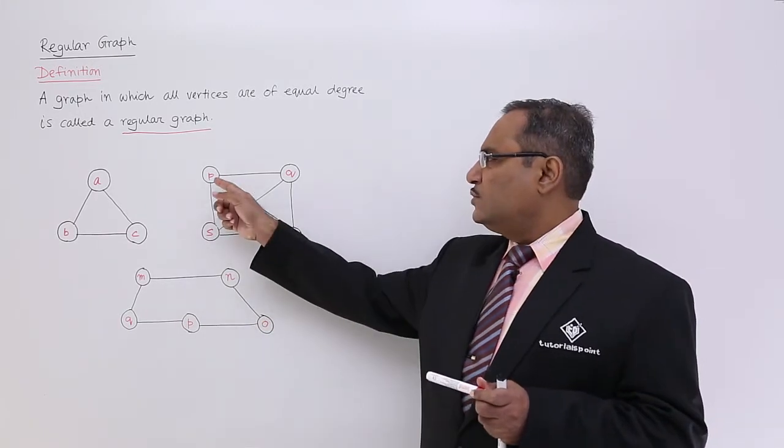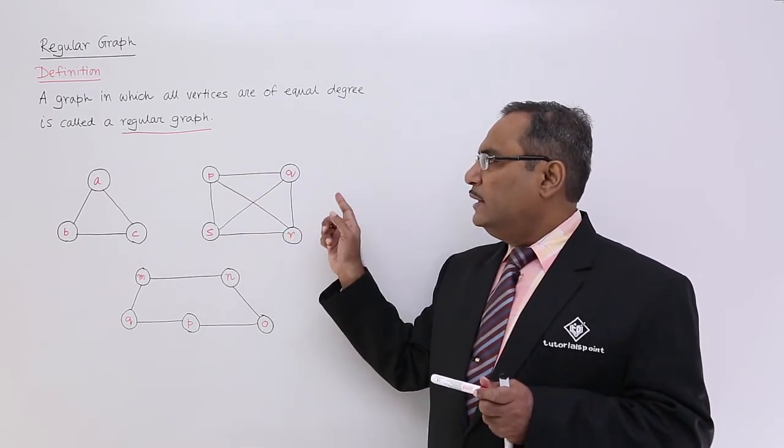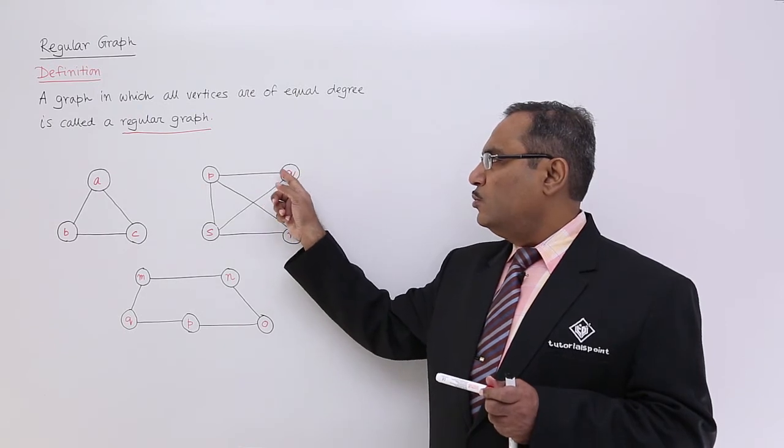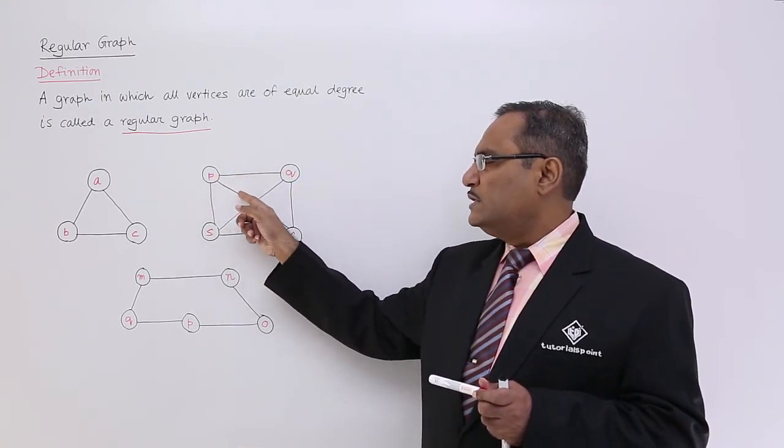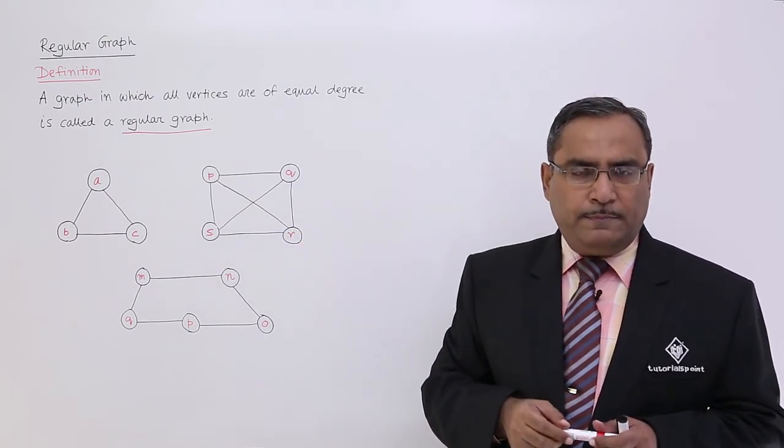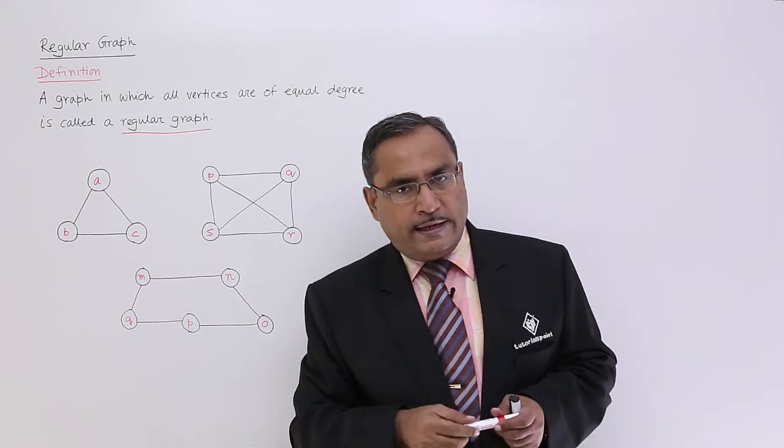Now, if you just omit one particular line, one particular edge of this graph, then you can find that this particular node will have degree 3, but this particular node will have degree 2 because this edge is not existing. As a result of that, it will not remain as a regular graph.